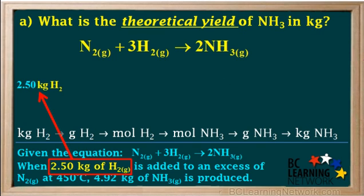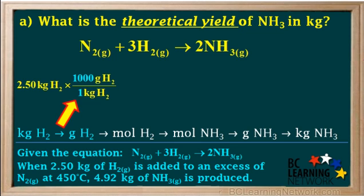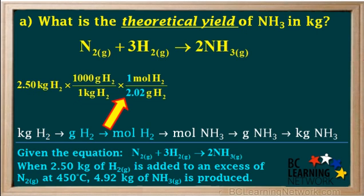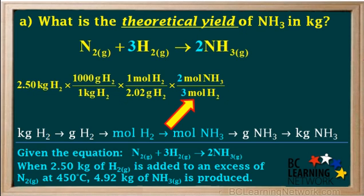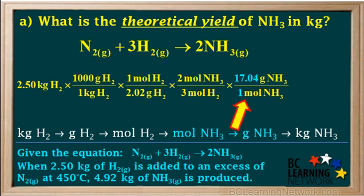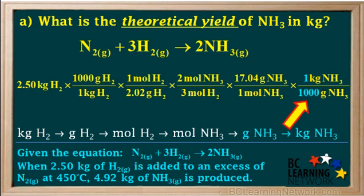The question tells us we have 2.5 kilograms of H₂, so we'll write that down. We convert kilograms to grams by multiplying by 1000 grams to 1 kilogram. Next we convert grams of hydrogen to moles by multiplying by 1 mole over the molar mass of H₂, which is 2.02 grams. Next we convert moles of hydrogen to moles of ammonia by multiplying by the mole ratio, 2 moles of ammonia to 3 moles of hydrogen, where the 2 is the coefficient on ammonia in the balanced equation and the 3 is the coefficient on hydrogen. Next we convert moles of NH₃ to grams by multiplying by the molar mass of NH₃, 17.04 grams to 1 mole. And finally, to convert grams of ammonia to kilograms, we multiply by 1 kilogram to 1000 grams.